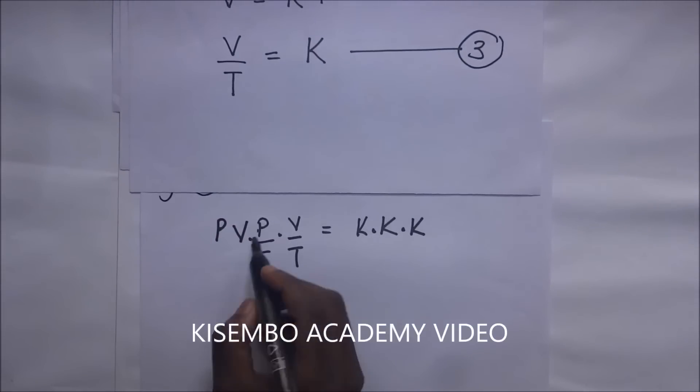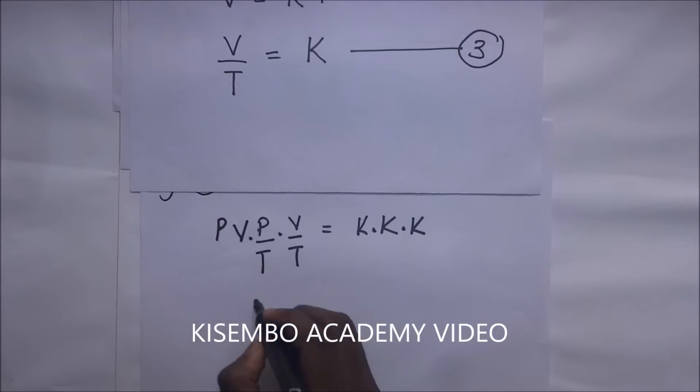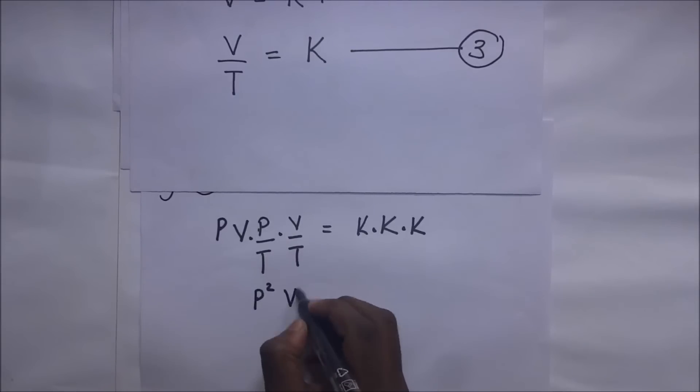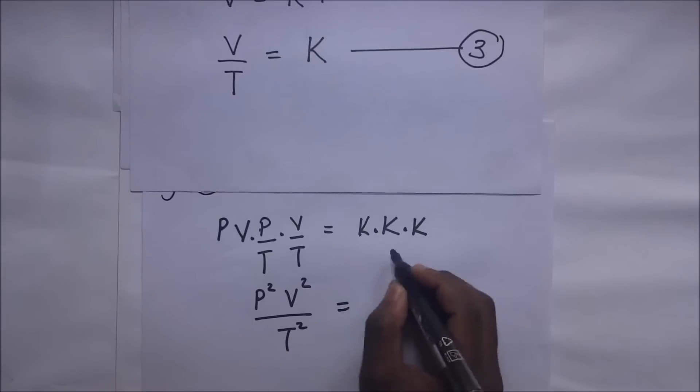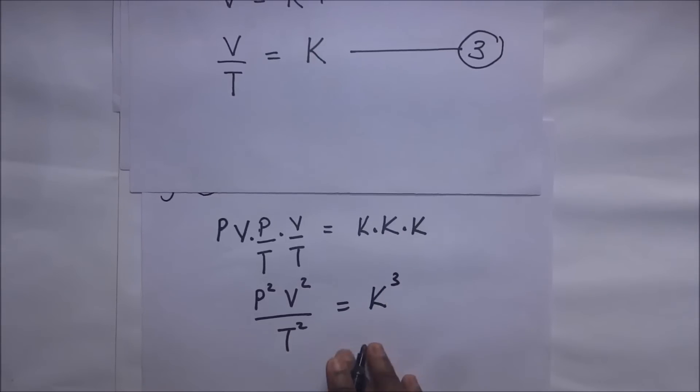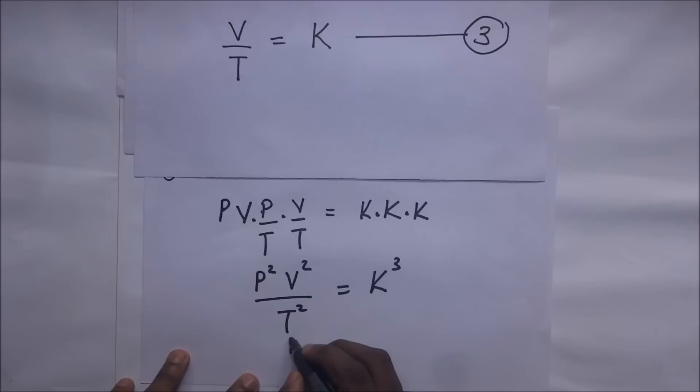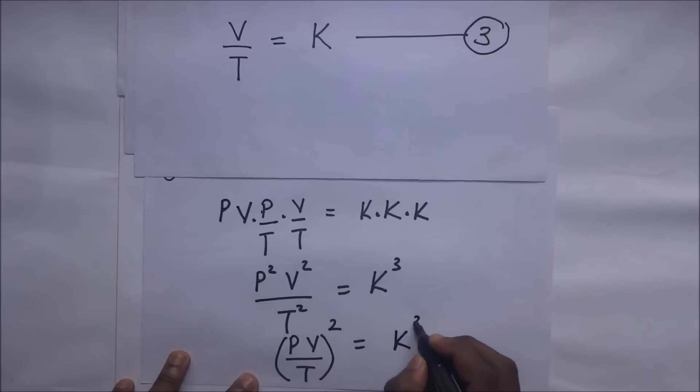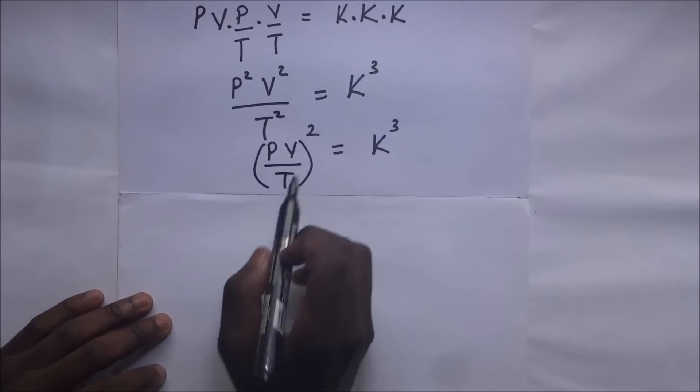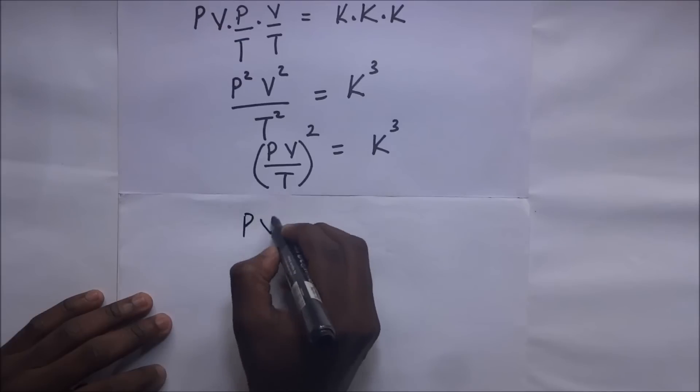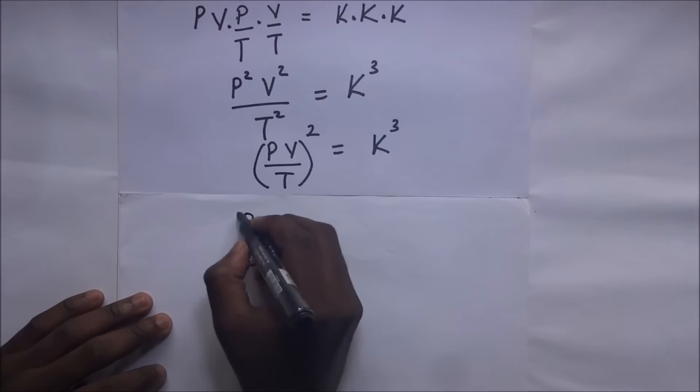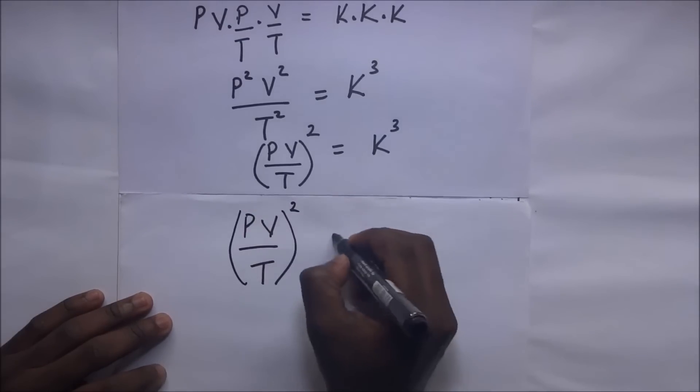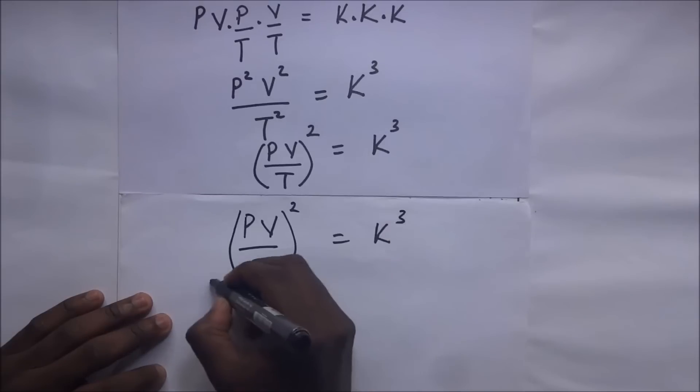When we multiply those, we end up with P times P is P squared, multiply that by V squared, divide that by T squared, which is going to be equal to K to the power 3. This is the same as saying PV over T all squared is going to give us K to the power 3. So to remove this square sign, it becomes PV over T squared equals K to the power 3.